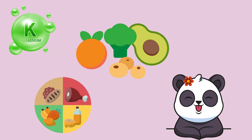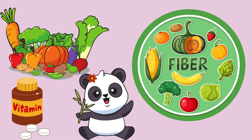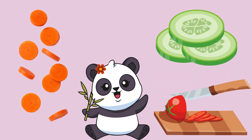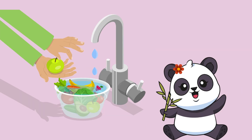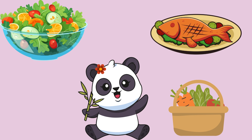Vegetables are important sources of many nutrients, including potassium, dietary fiber, folate, vitamin A, and vitamin C. There are many ways to eat vegetables. You can eat just the vegetables in slices, but don't forget to wash them. You can also cook them in your food in special food recipes.